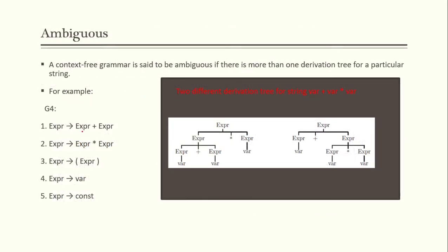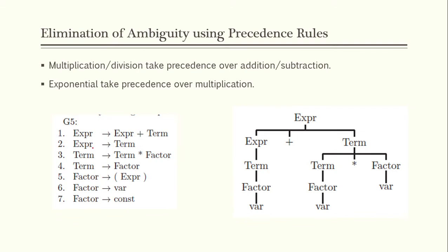We remove the rule 'expression equals expression times expression' and introduce a 'term'. The new grammar becomes: expression equals expression plus term; expression equals term; term equals term times factor; term equals factor; and factor can be a variable, a constant, or another expression in parentheses. For our string 'var plus var times var', we replace factor with 'var'.